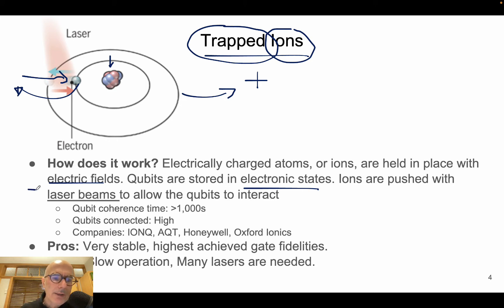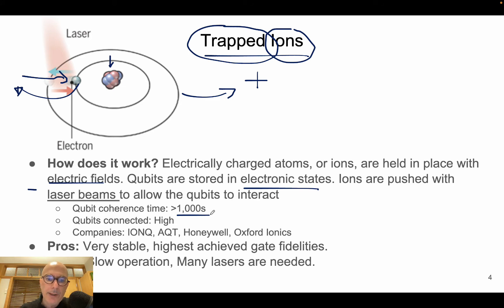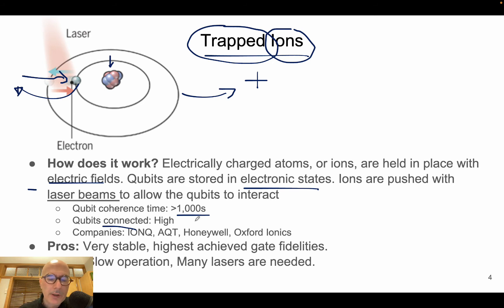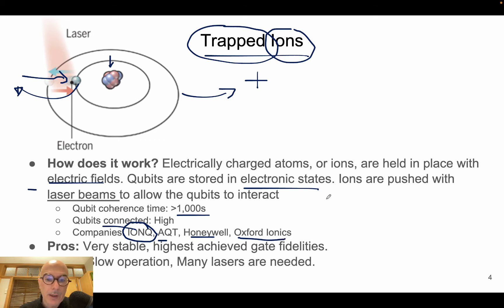Looking at the numbers: qubit coherence time in the case of trapped ions is very high, approximately more than 1000 seconds — quite a long time before noise disrupts the quantum bit state. The connectivity is also quite good and high. Major companies investing heavily in trapped ions include IonQ, AQT, Honeywell, and the UK-based Oxford Ionics.